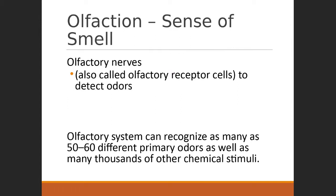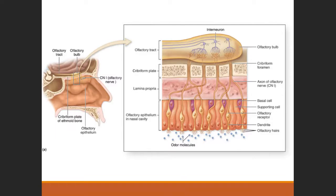Next up is olfaction — cranial nerve 1, also a chemoreceptor. Very fine nerve endings extend out into the nasal mucosa detecting particulates that have been inhaled. Recall from our skeletal structures the ethmoid bone with the cribriform plate. The olfactory bulb extends out underneath the frontal lobe — it would sit right on top of the ethmoid bone. All those little fine pinholes in the cribriform plate are passageways for those very fine nerve endings of olfaction.